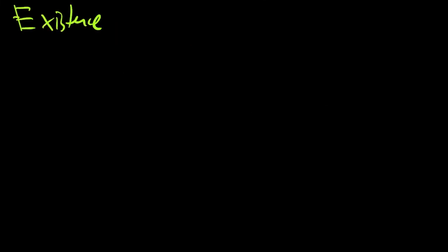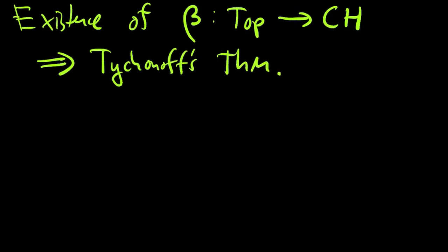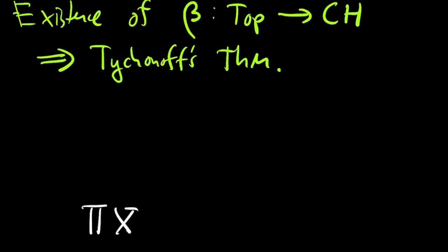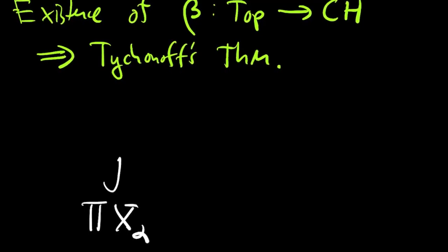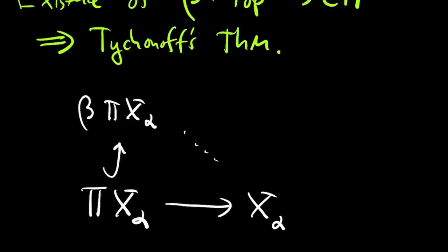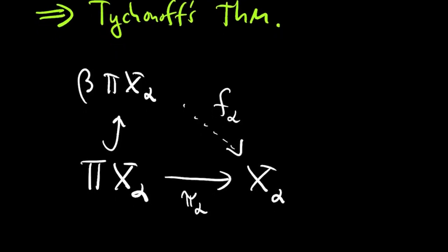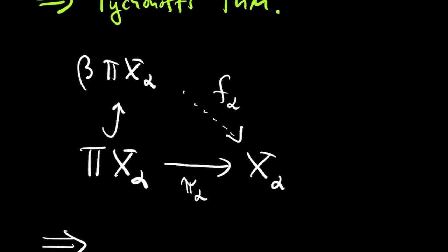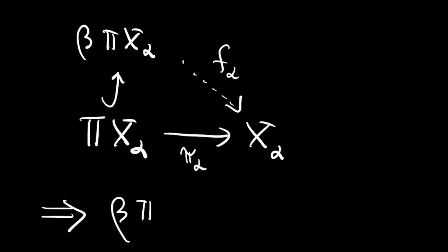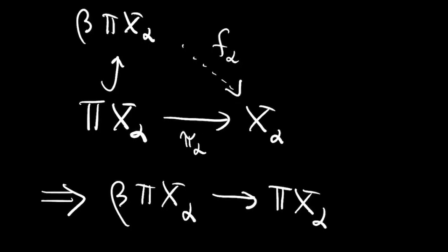As an application, let me use the Stone-Čech compactification to give a nice proof of Tychonoff's theorem. Suppose you have a collection of compact spaces X_alpha and consider their product. Look at the Stone-Čech compactification of the product. All the projection maps from the product to each X_alpha are maps to compact Hausdorff spaces, so you get maps from the Stone-Čech compactification of the product down to each factor X_alpha. By the universal property of the product topology, these maps assemble to give a map from the Stone-Čech compactification down to the product, showing the product of the X_alphas is the image of a compact Hausdorff space and therefore is compact.